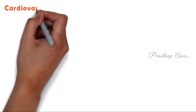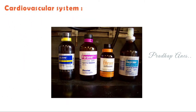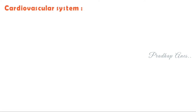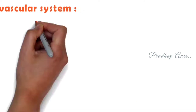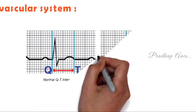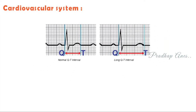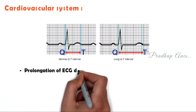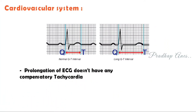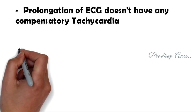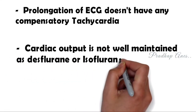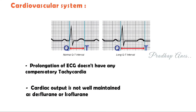Cardiovascular system: All inhalational anesthetic agents cause hypotension. In addition to hypotension, Sevoflurane also prolongs the QT interval on ECG. This prolongation does not have any compensatory tachycardia. Cardiac output is not as well maintained as with desflurane or isoflurane.